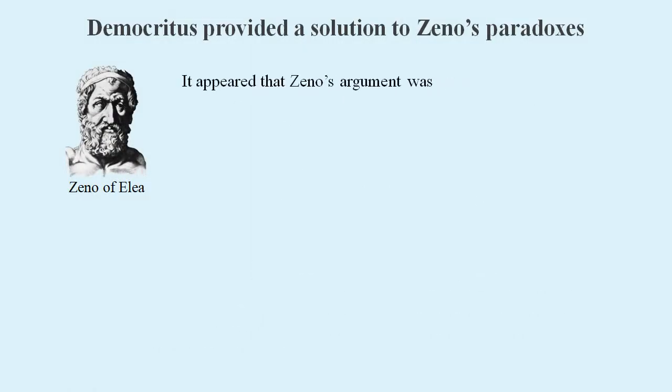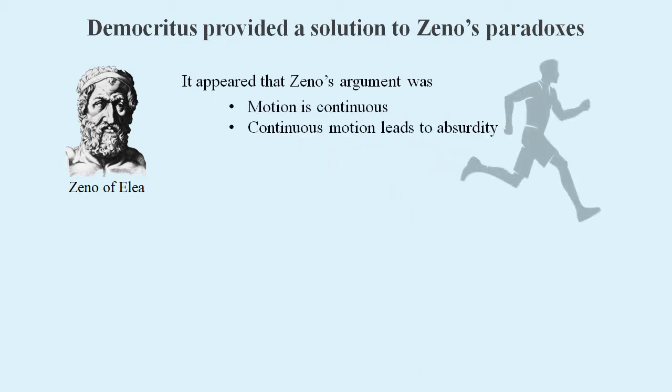In summary, Zeno's argument was this: Motion is continuous. Continuous motion leads to absurdity. Therefore, motion is not possible.